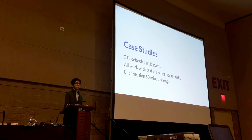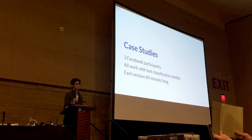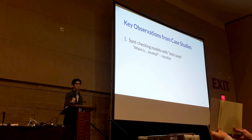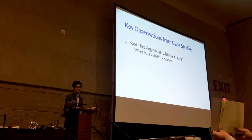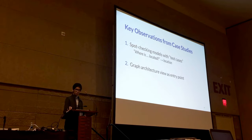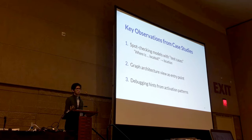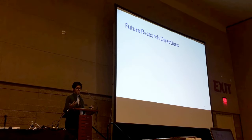We conducted case studies with three Facebook engineers and data scientists who created text classification models on FB Learner, and each participant used Activist on their own datasets. We summarize three key observations: first, Activist helped them spot-check models with their test cases; second, the computation graph view was especially helpful for people less familiar with deep learning models, helping them understand their models before diving into activation details; and third, visual patterns in Activist provided hints for further improving models and tuning hyperparameters.